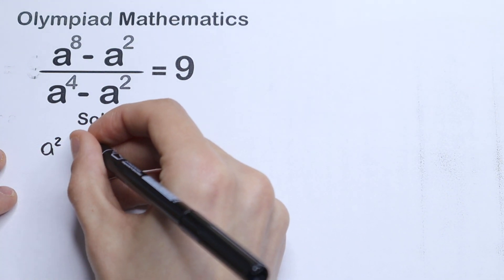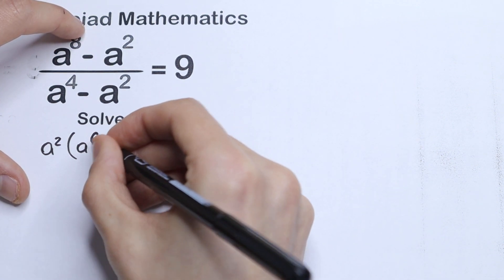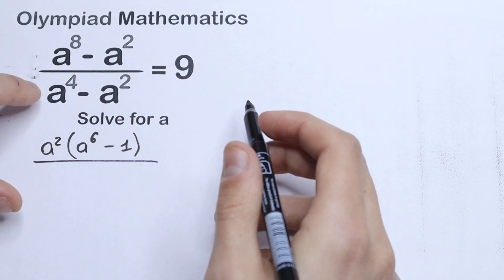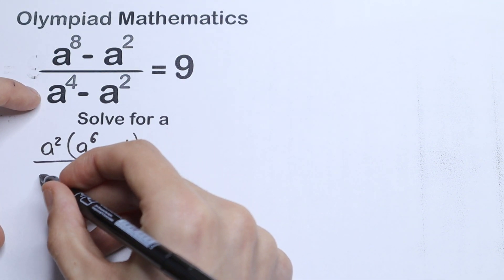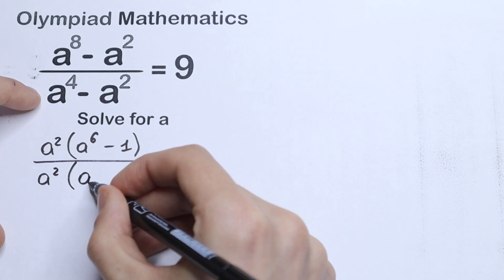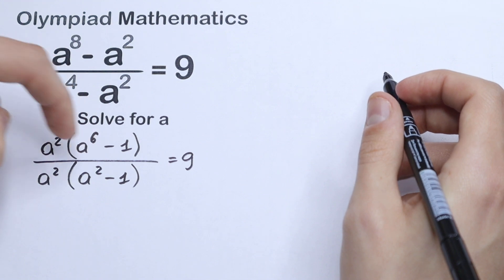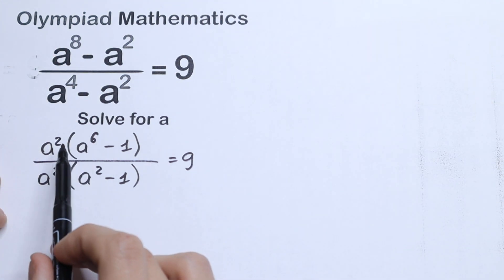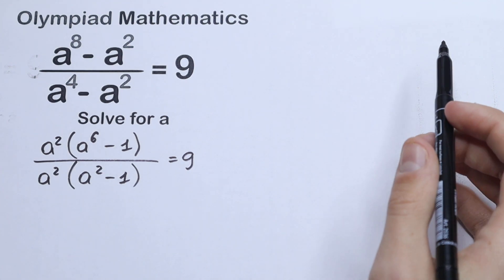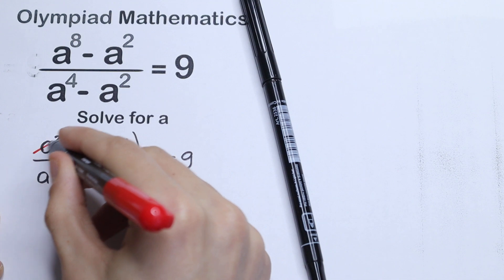As a result in the numerator we will have a squared times, in parentheses, a to the sixth power minus 1. And in our denominator we do the same step: a squared times, in parentheses, a squared minus 1, equal to 9. If we multiply this out it will be the same — we add the powers and minus a squared. So it's a really good moment to cancel this a squared.